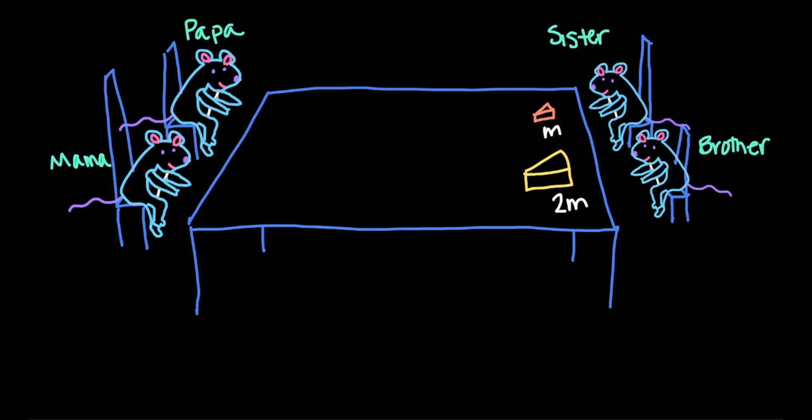Brother and sister rat are full so they send the cheeses back for mama rat. Brother rat pushes the larger piece of cheddar and sister rat pushes the smaller piece of Swiss so that the Swiss is going twice as fast as the cheddar. Now which cheese has more kinetic energy?